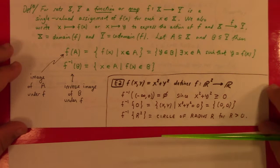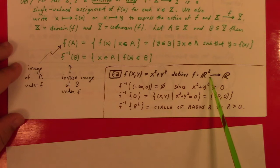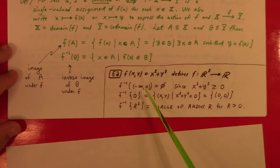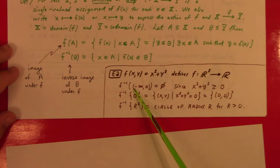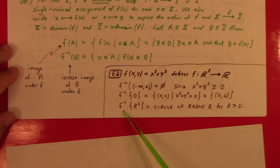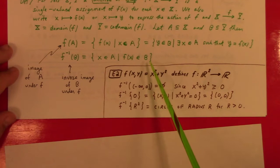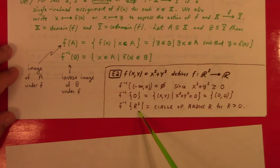An example: if F(x,y) = x² + y², that defines a function from R² to R. The inverse image of the negative numbers is the empty set because x² + y² can't be negative. The inverse image of {0} is just the origin, since the only solution to x² + y² = 0 is (0,0). For R > 0, the inverse image of {R²} is a circle of radius R centered at the origin — that's exactly the set where x² + y² = R².